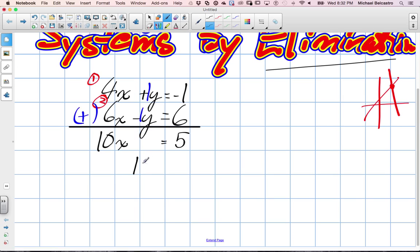So now we can squeeze them a little closer together. 10x is equal to five, and to isolate for x, I divide both sides by 10, and x is equal to one-half, or 0.5.